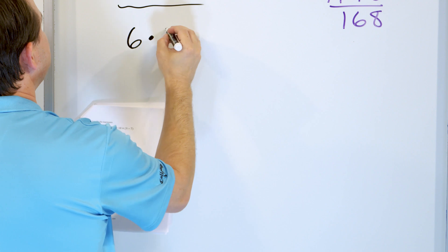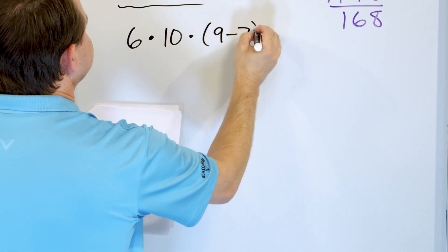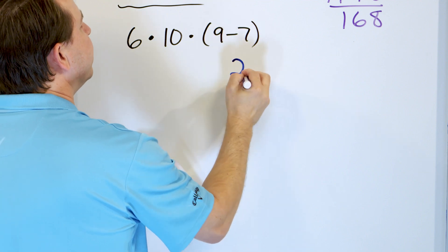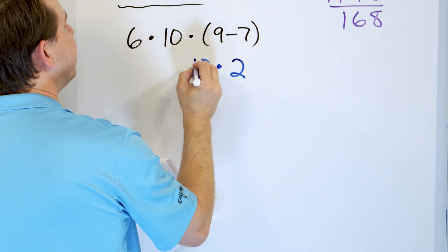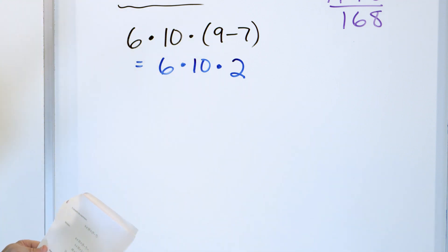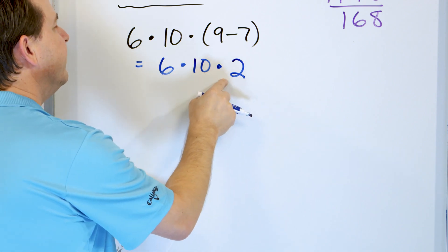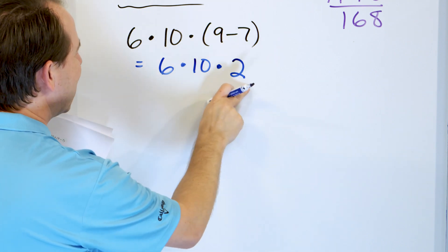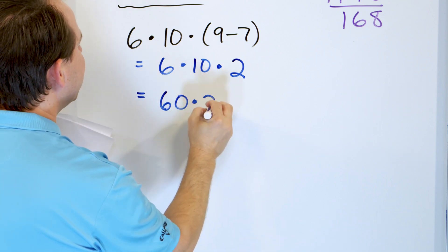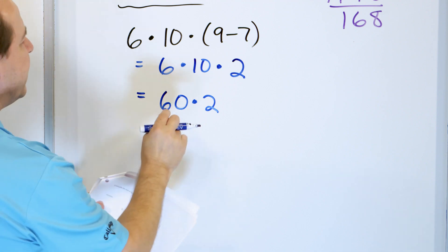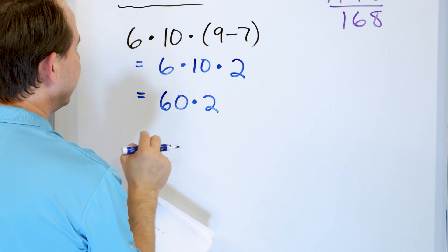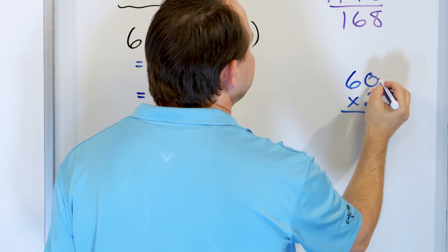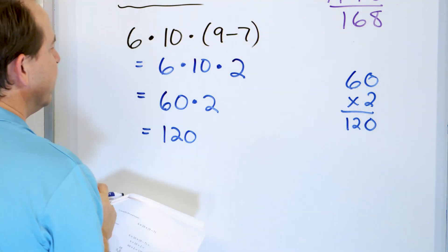Let's take a look at 6 times 10 times parentheses 9 minus 7. We focus on what's inside the parentheses first: 9 minus 7 is 2, so we drop the parentheses and rewrite. Now we have 6 times 10 times 2 — all multiplications, so we go left to right. 6 times 10 is 60, still multiply by 2. 60 times 2: if you cover up the 0, 6 times 2 is 12, add the 0 at the end, you get 120. So 120 is the final answer.